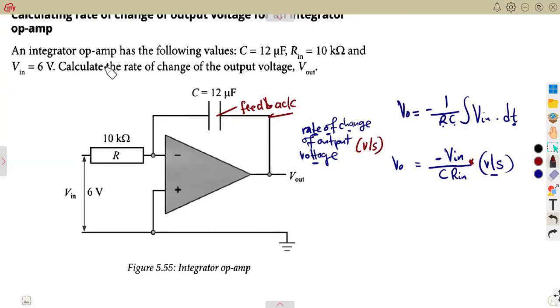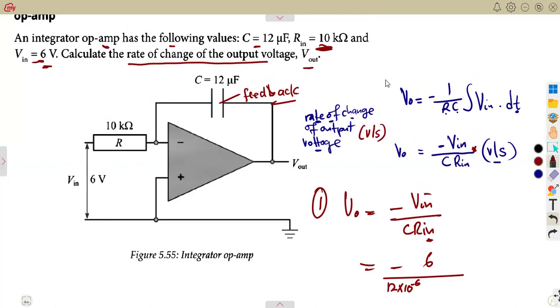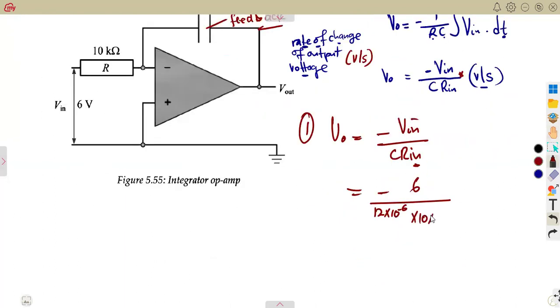So we are given an integrator op-amp has got the following values: the capacitor R_in, V_in. Calculate the rate of change of the output voltage. So simply the rate of change, as we saw, is minus V_in over CR_in. So just going to substitute minus V_in. The input voltage is given as 6V over the capacitance value, which is 12 microfarad, 12 times 10 to the exponent of negative 6, times the input resistance, which we are given as 10 kilo-ohms, so 10 times 10 to the exponent of 3. And this is going to give us the output voltage, which is the rate of change, and that's minus 50 volts per second.